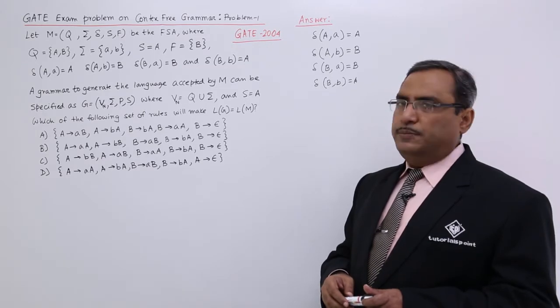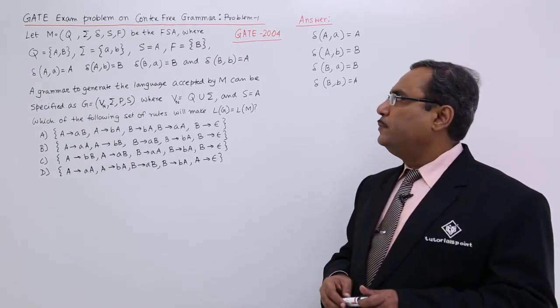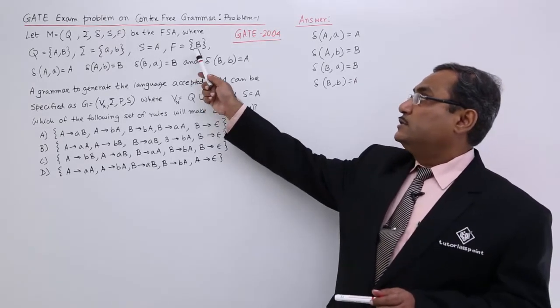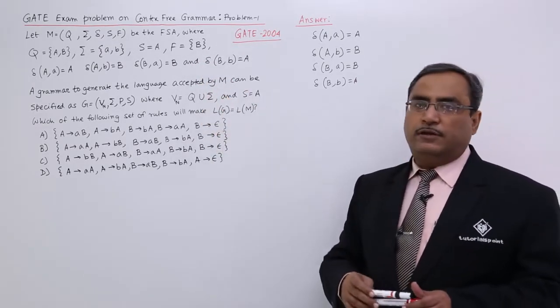Sigma are the input symbols, they are small a and small b. Starting state is A and set of final states is containing B only and these are the transitions given.